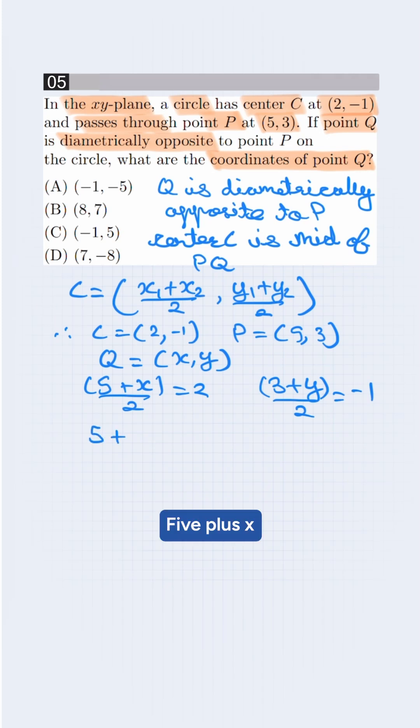5 plus x is equal to 4 so x value will be minus 1. Now finding y value, it will be 3 plus y is equal to minus 2. y will be minus 5.